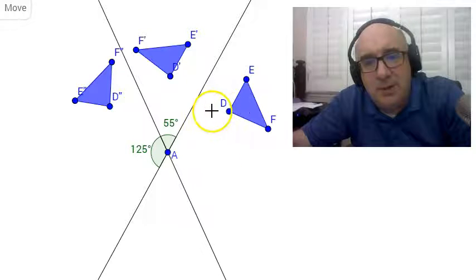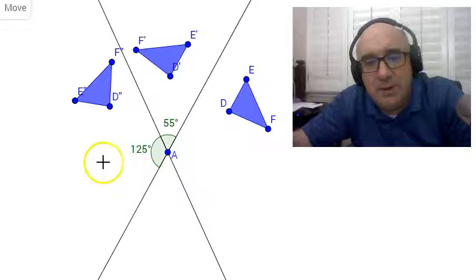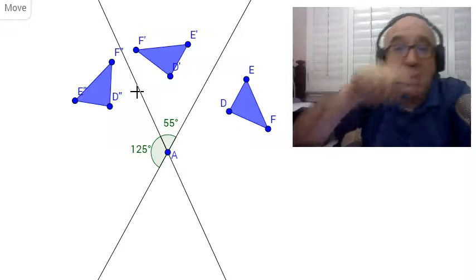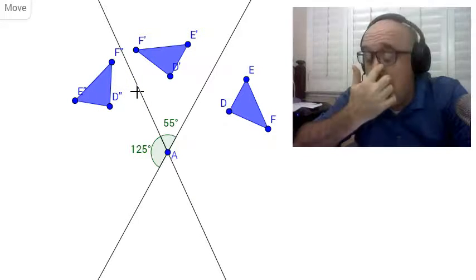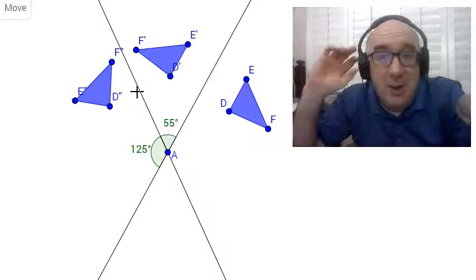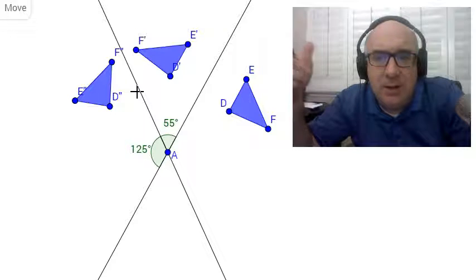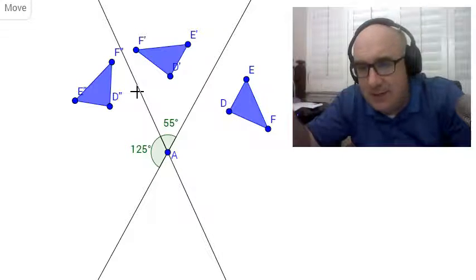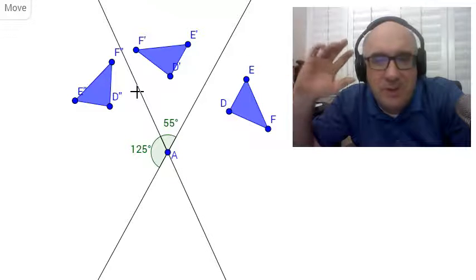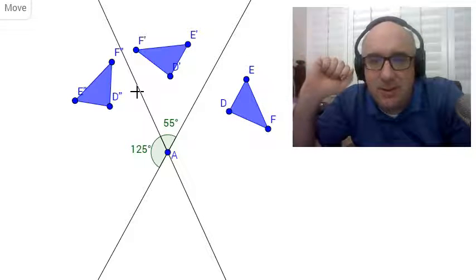But in that direction, we would have stated that we would have gone over here first, and then here. That's a clockwise direction, which is negative, and so that would be a negative 250. Wait a minute. 110 degrees, negative 250. Those are the exact same location.